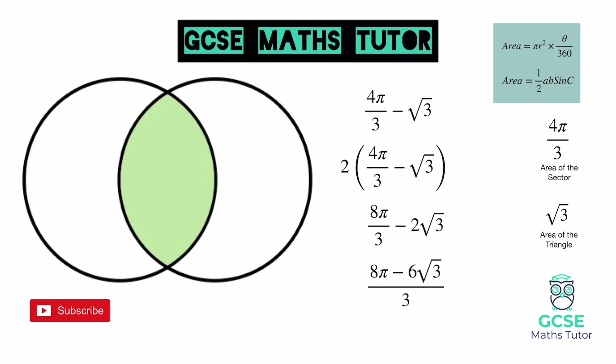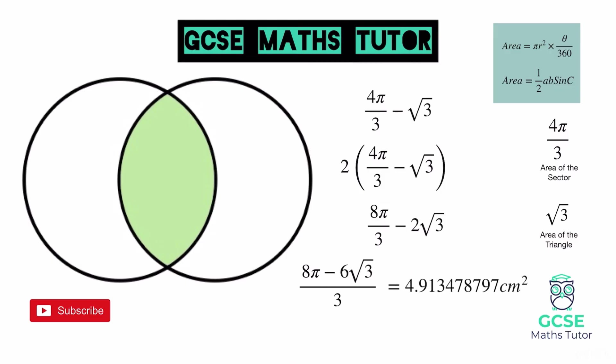If you want to type this into a calculator and get a decimal answer, the decimal result in centimetres squared is shown on the screen. Rounded to two decimal places, it would be 4.91 centimetres squared. That's our final answer, and that's how you approach this question using only GCSE skills.